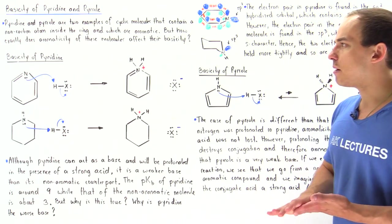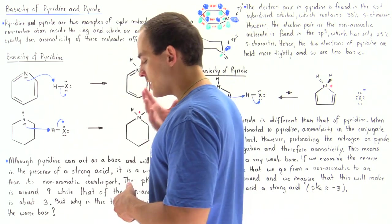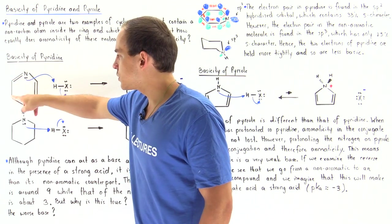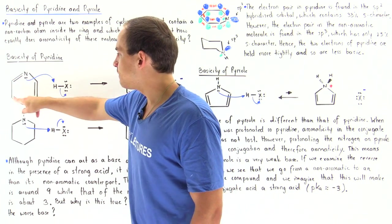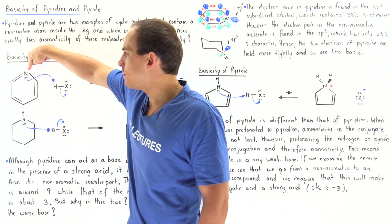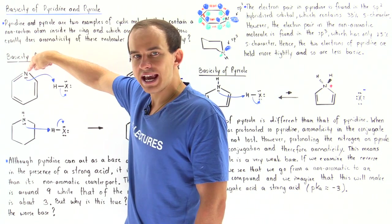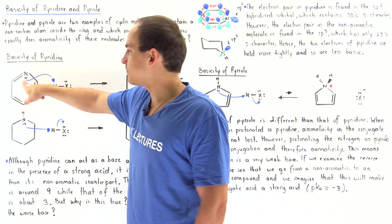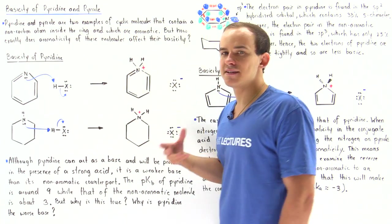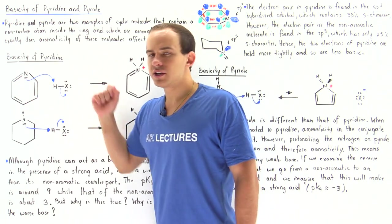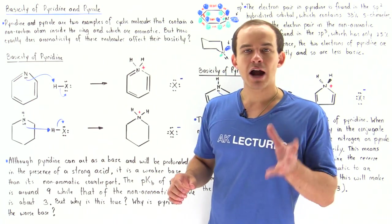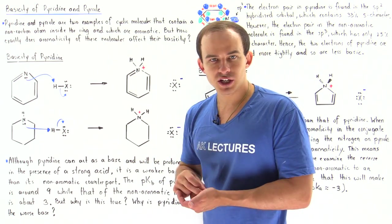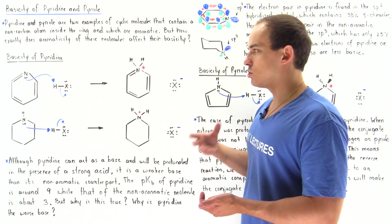Let's begin by taking a look at the basicity of pyridine. Pyridine has a six-membered ring with five carbon atoms, where one carbon is replaced with a nitrogen. The nitrogen has a lone pair of electrons that can potentially act as a base. This molecule is in fact aromatic — it's cyclic, planar, fully conjugated, and obeys Huckel's rule.